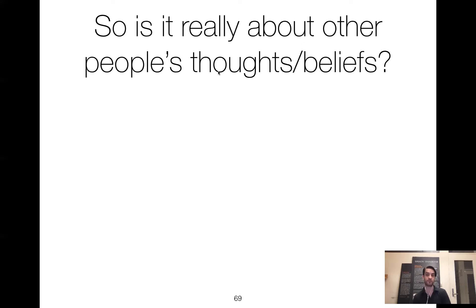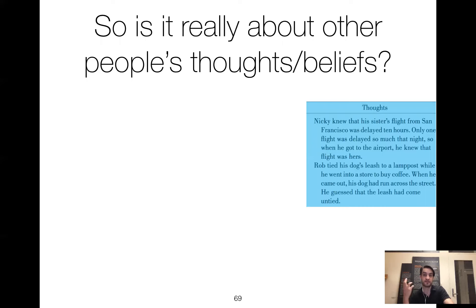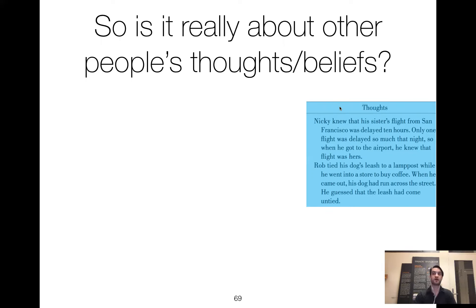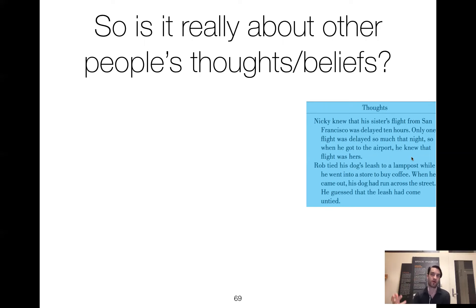The experimenters said, okay, that's a fair point — let's dig a little deeper. We're going to try to come up with stories that do involve people but don't involve their thoughts, beliefs, and mind. So there are three conditions. The first is a thought condition, where we look at people's thoughts. For example: 'Nikki knew that his sister's flight from San Francisco was delayed 10 hours. Only one flight was delayed that much, so when he got to the airport, he knew the flight was hers.' Or: 'Rob tied his dog's leash to a lamppost. When he came out, his dog had run across the street. He guessed the leash had come untied.' In all these stories, there's an inferential part where you're learning about what another person is thinking.